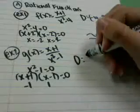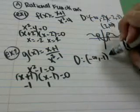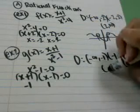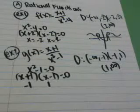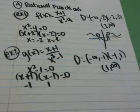So my domain is from negative infinity to -1, -1 to 1, and 1 to infinity. You'll notice in all of these that I'm using parentheses, not brackets, and that I'm going in order from least to greatest. That's very important when you're talking about the domain of rational functions.